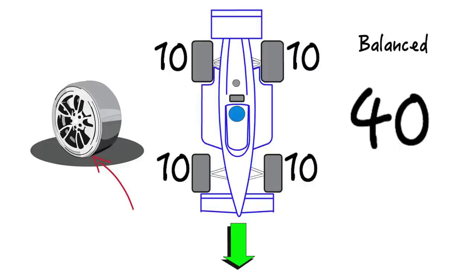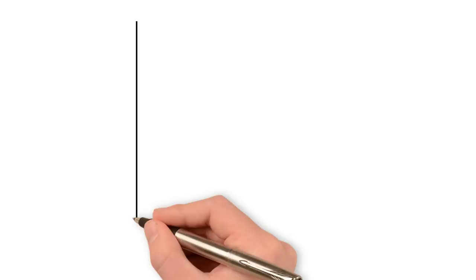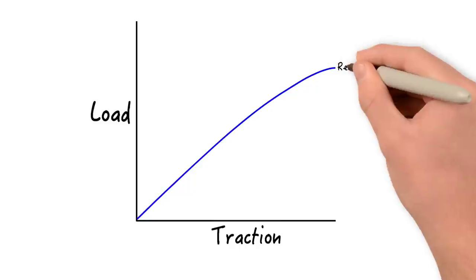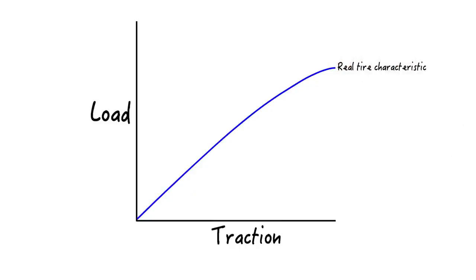Now, as you know, when you put more load on a pair of tires, for example from weight transfer, they gain traction, as this load versus traction graph illustrates. And tires that have load taken off of them lose traction, but notice that it's not proportional. In other words, the tires with more load do not gain as much traction as the unloaded tires lose.